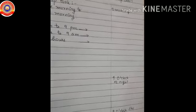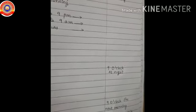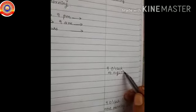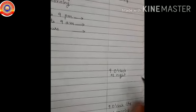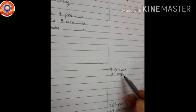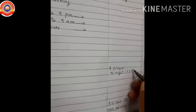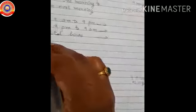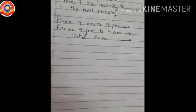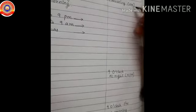Between 9.00 morning and 9.00 the next morning, there is another 9.00. Which is that? 9.00 o'clock at night — that is 9.00pm. At first, we have to find the hours from 9.00am to 9.00pm. To find that, we can add one hour continuously from 9.00am until we get 9.00pm.